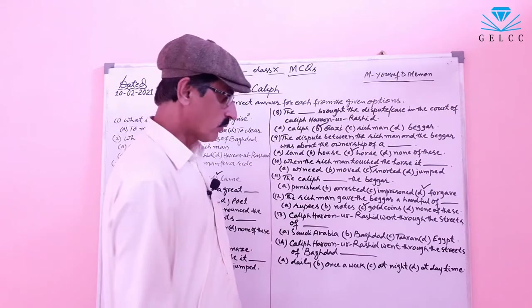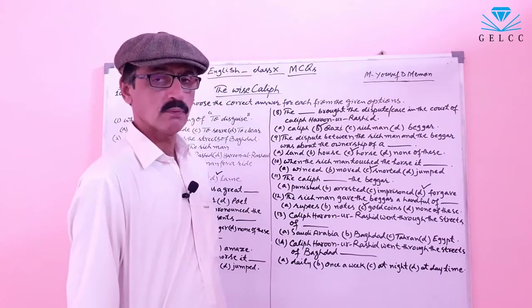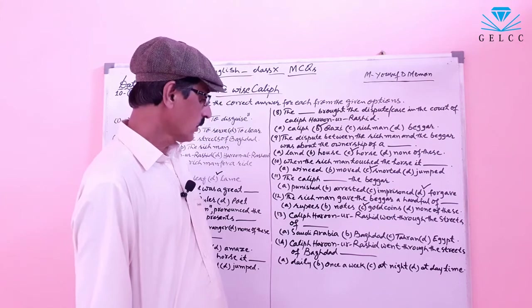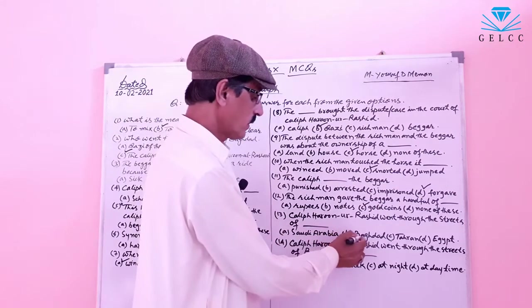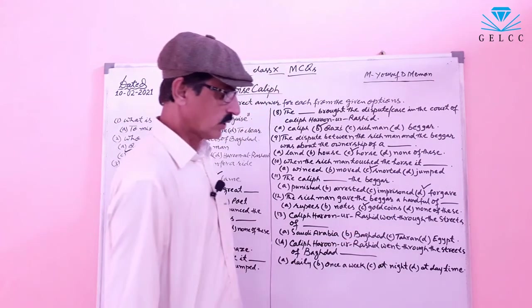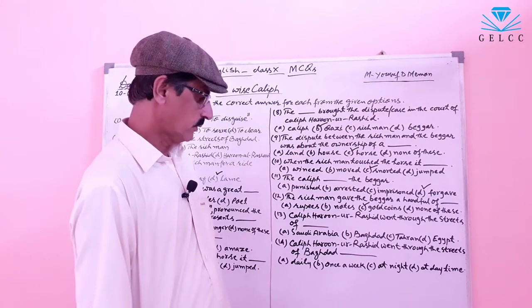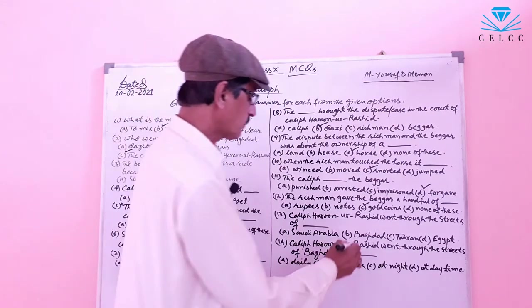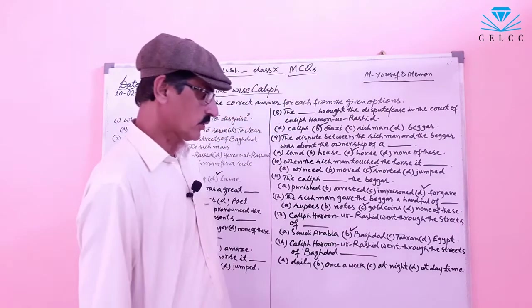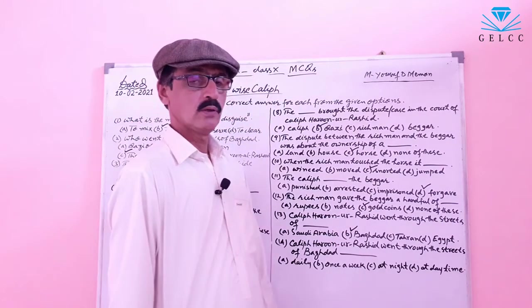Number 13: Caliph Harun Rashid went through the streets of which city? Options: A: Saudi Arabia. B: Baghdad. C: Tehran. D: Egypt. The correct answer is option B — Baghdad. The Caliph Harun Rashid went through the streets of Baghdad.